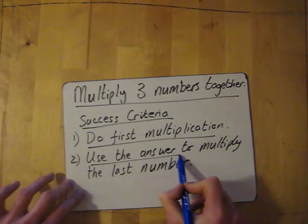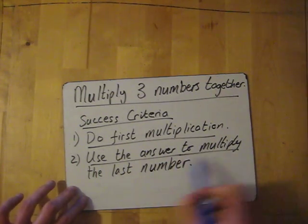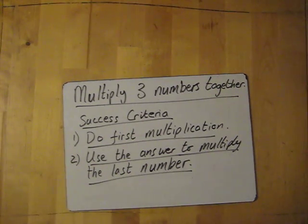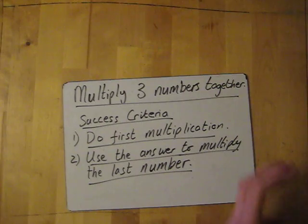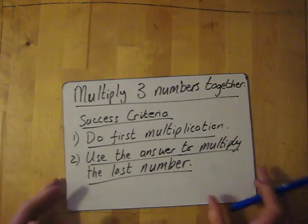And then use the answer from that to multiply with the last number. Okay, so do the first multiplication, then use that answer to multiply it with the last number. That's basically all you do.